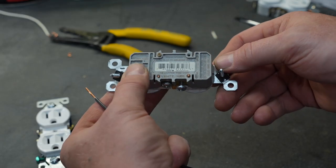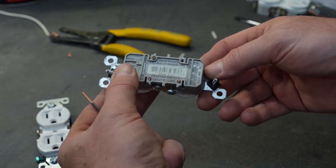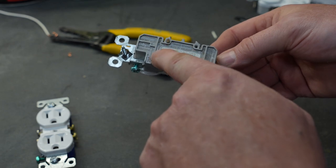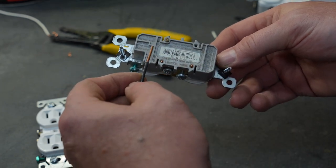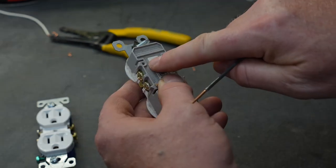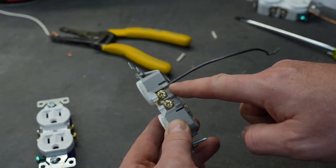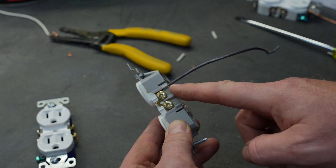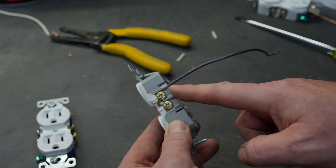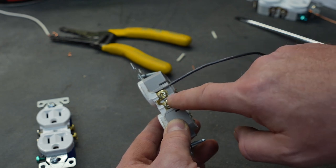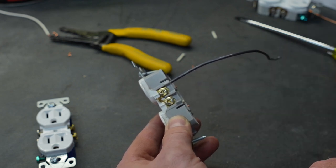Now, the back of the outlet has a nifty little feature that I personally don't like to use and people call this backstabbing. There is typically a little tool built in that tells you how far to skin the wire back and these holes are where you push the wire in. I'm not a fan of this type of connection because I really don't think the pinch that's holding this wire in place is all that great. When given the opportunity, I always use the screw to tighten the wire onto the fixture.